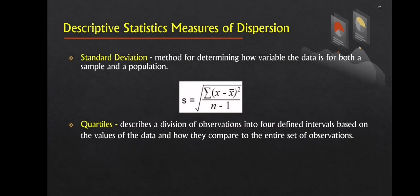The next is the standard deviation and quartiles. Standard deviation is a method for determining the degree of variability in data for both a sample and a population, while quartiles is a division of observations into four defined intervals based on the data values and how they compare to the entire set of observations.